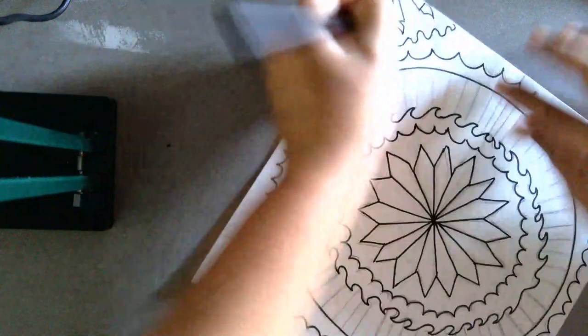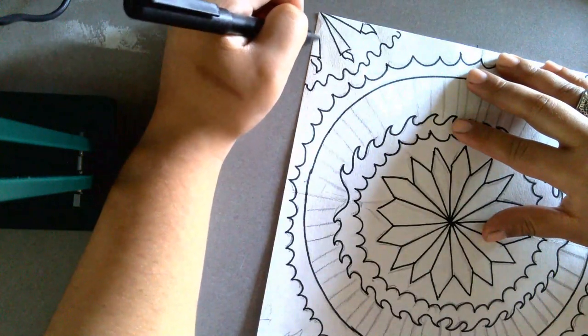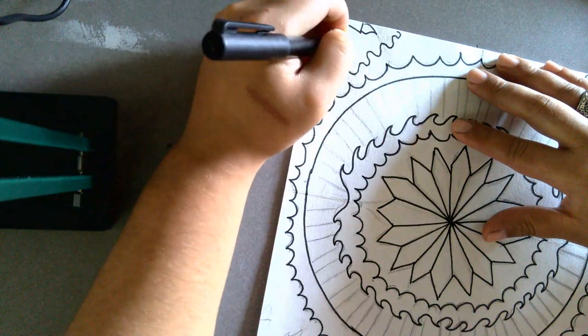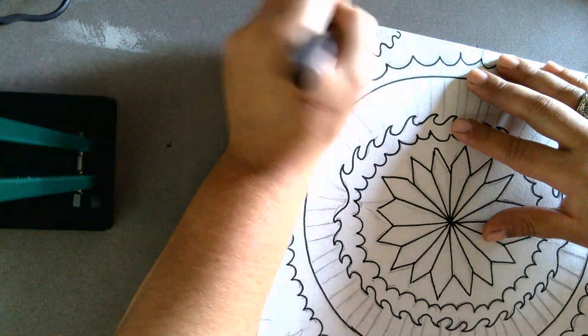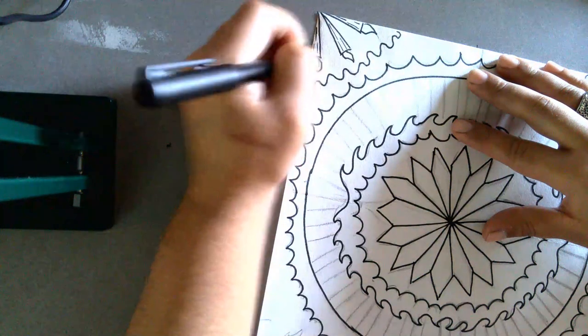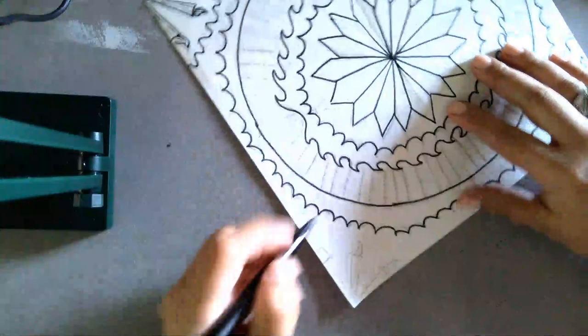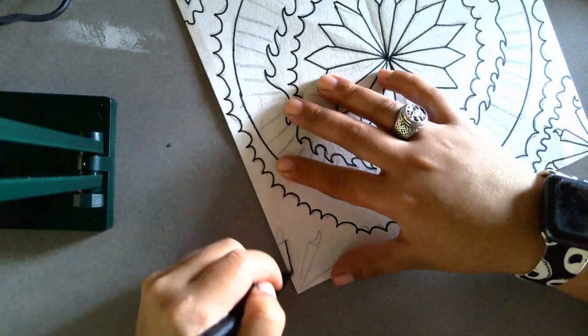This is also a time where if you missed any details that you wanted, like I feel like this should have a little bit of texture just so that I know that it's supposed to be a paintbrush, plus on the little hairs. You can do that right now too with your dark marker that way it's super visible.